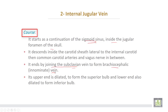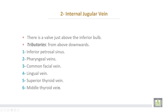Its upper end is dilated to form the superior bulb, and the lower end is also dilated to form the inferior bulb. There are valves just above the inferior bulb of the internal jugular vein.